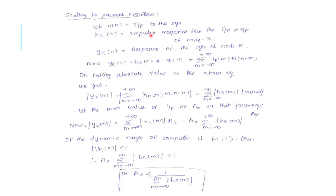Let x(n) be the input to the system, h_k(n) the impulse response between the input and output of node k, and y_k(n) the response of the system at node k. y_k(n) equals h_k(n) convolved with x(n), which equals the summation from m equals minus infinity to plus infinity of h_k(m) times x(n minus m). Taking the absolute value of the equation, let the maximum value of the input be A_x such that the modulus of x(n minus m) is less than or equal to A_x.